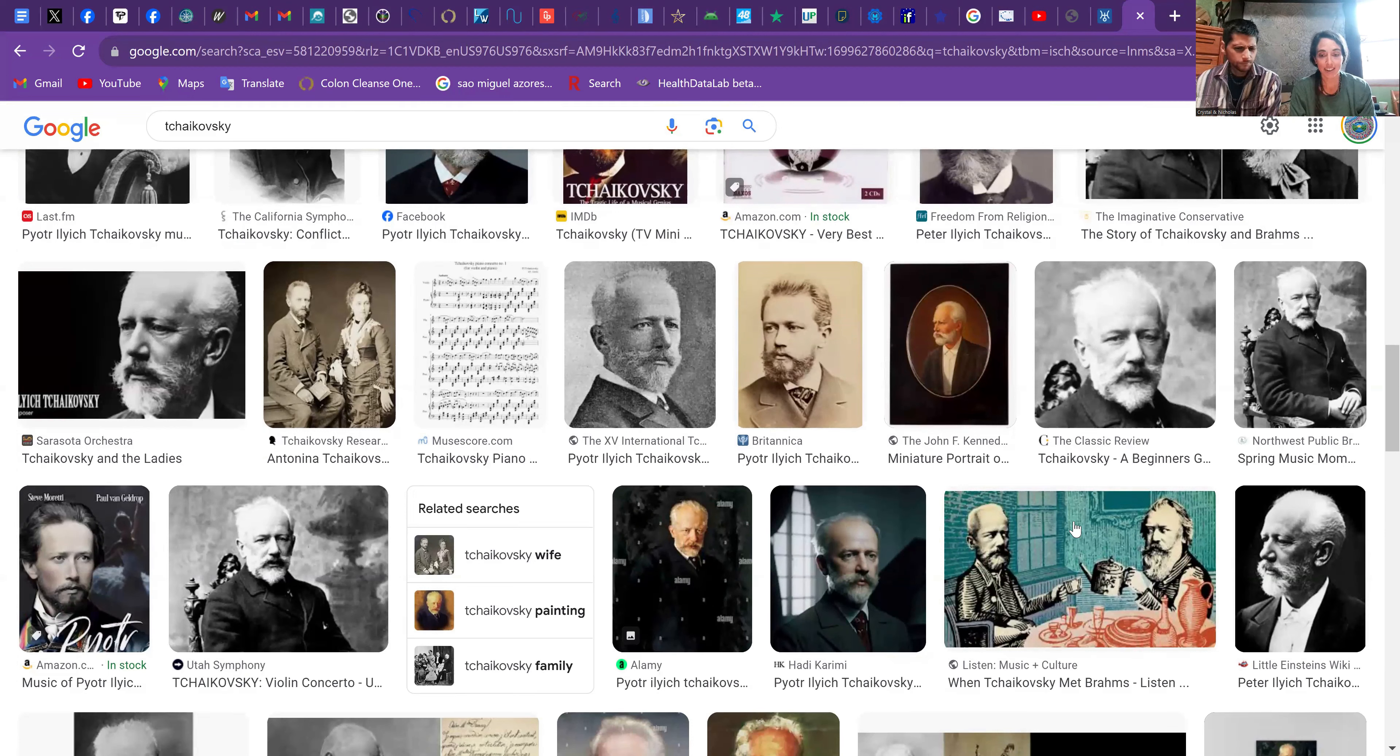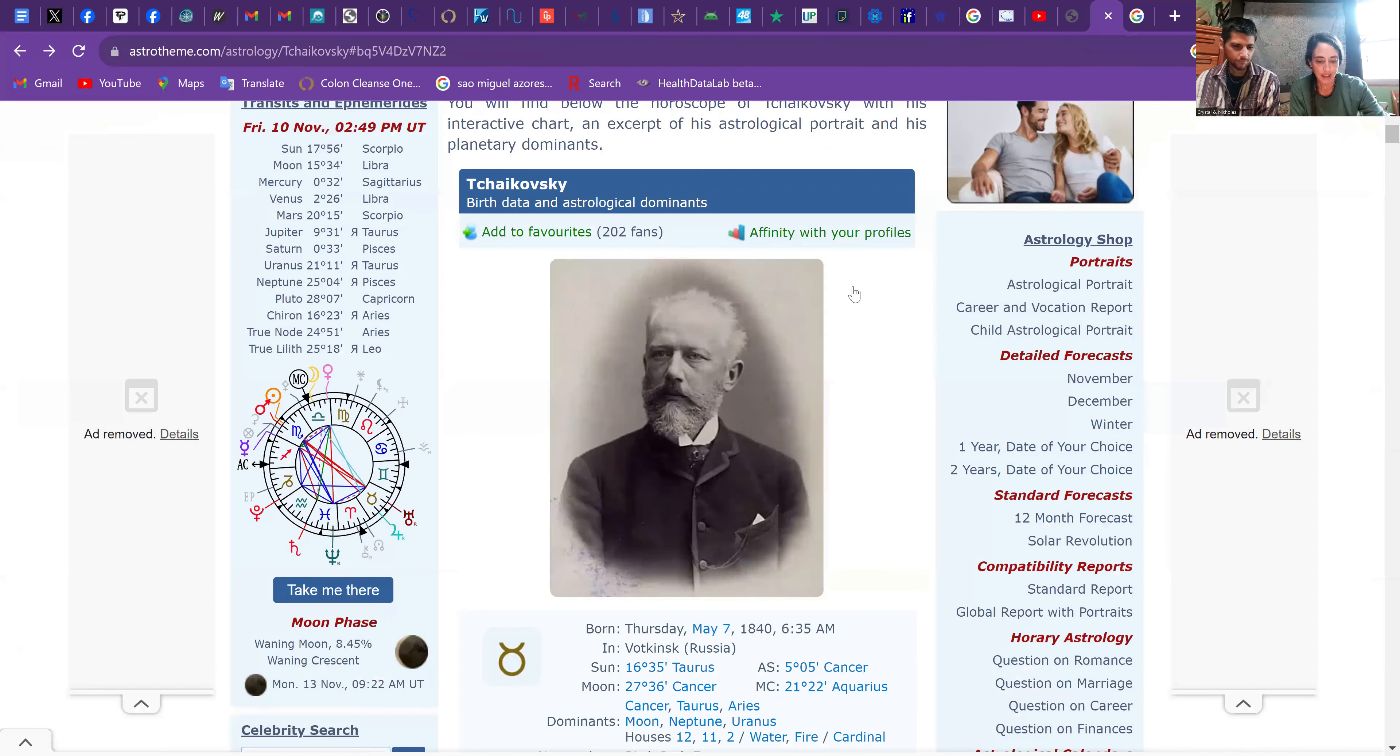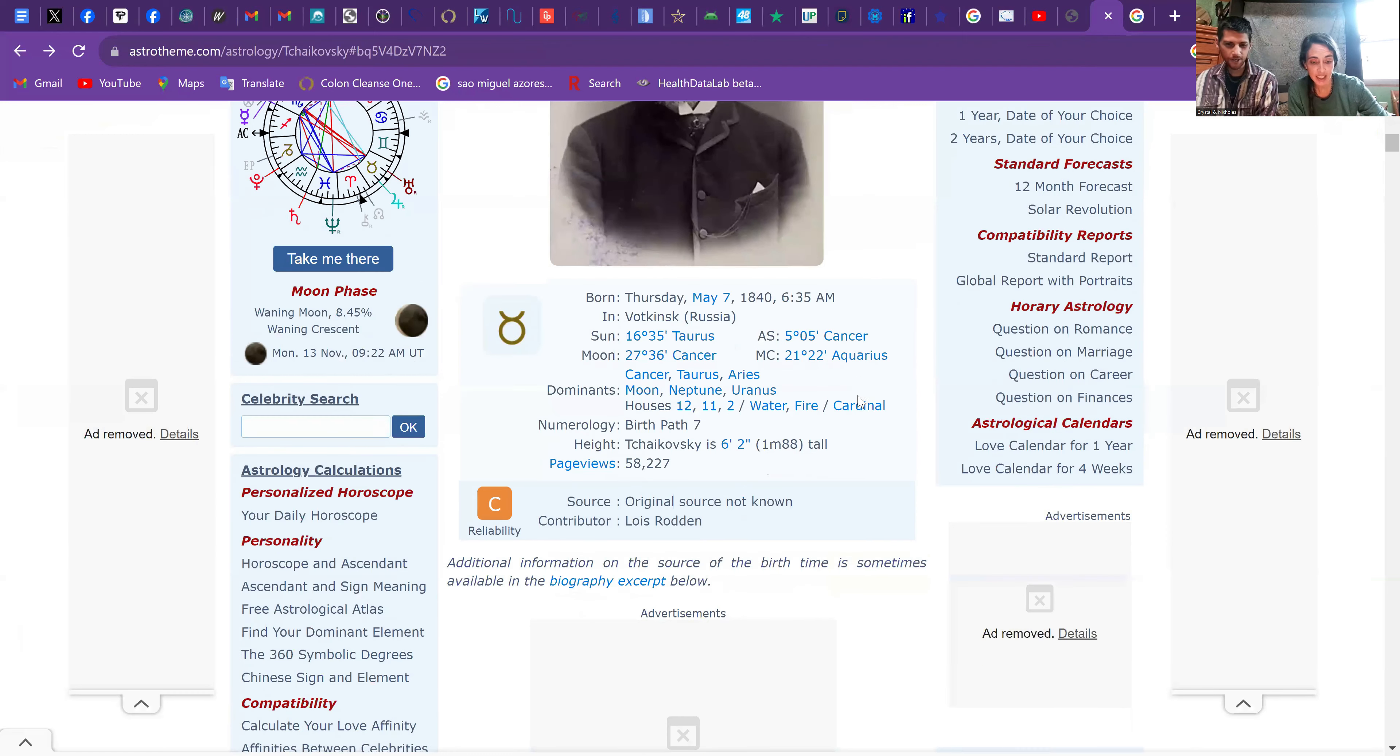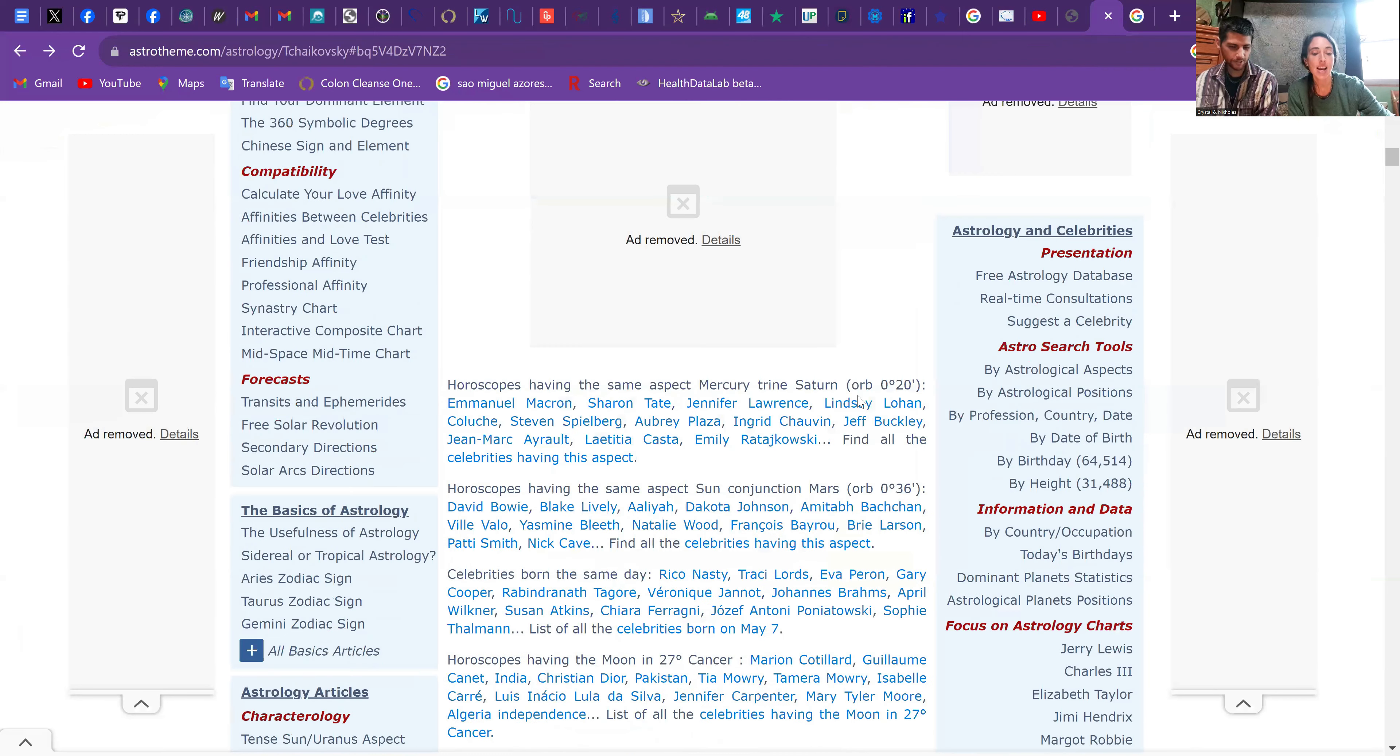We haven't looked at his chart yet. He looks a little Leo too, but maybe not. Let's see—oh, Taurus! Who guessed it? May 7th. Taurus sun, Cancer moon, Cancer ascendant. See, he's round. That's why.